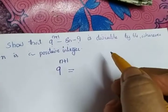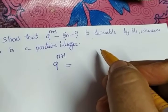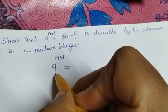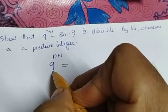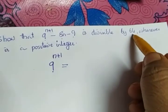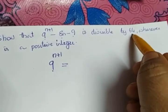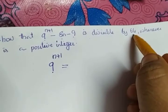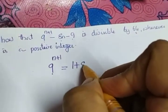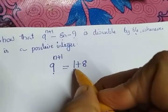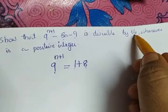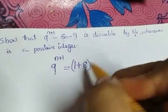I am going to apply the Binomial Theorem. To apply the Binomial Theorem I need 2 terms. So I am going to split 9 into 2 terms as a sum, with the condition that one term must be a multiple or a factor of 64. So I can write 9 as 1 plus 8, so that 8 is a factor of 64, giving (1+8) raised to n+1.